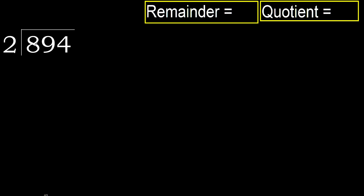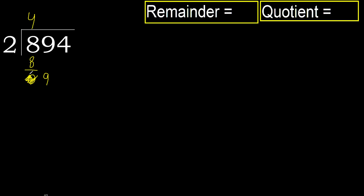894 divided by 2. 8 is not less, therefore work with 8. 2 multiplied by which number is nearest to 8 but not greater? 2 multiplied by 5 is 10, which is greater. 2 multiplied by 4 is 8, which is not greater. Subtract, then next. Bring down 0.